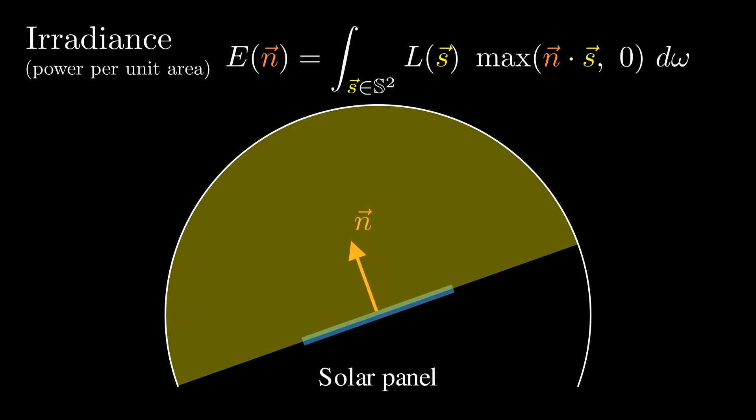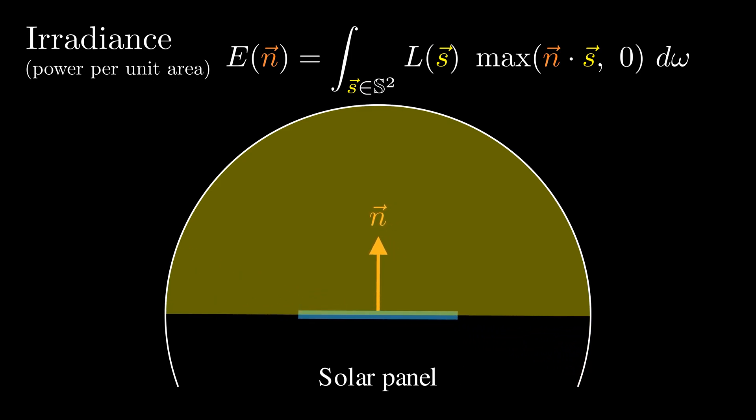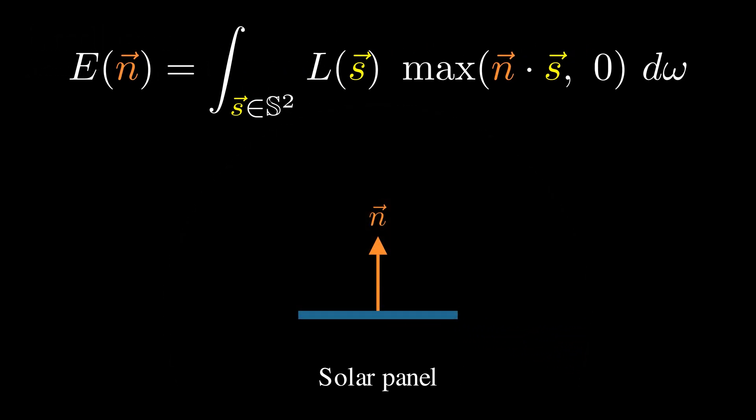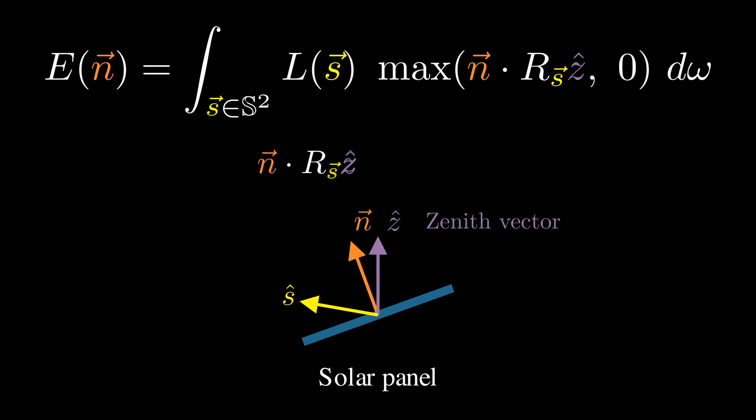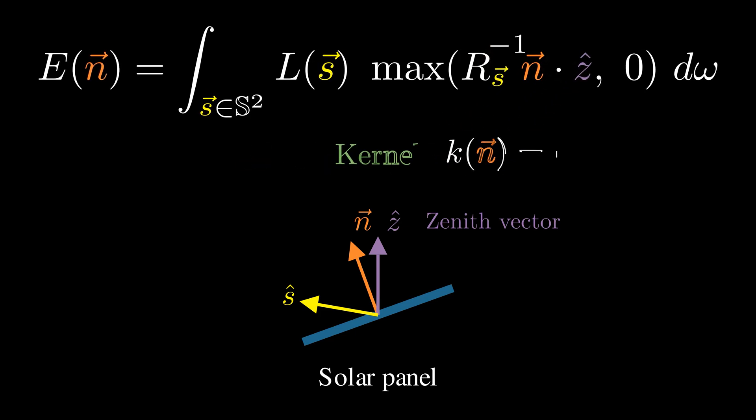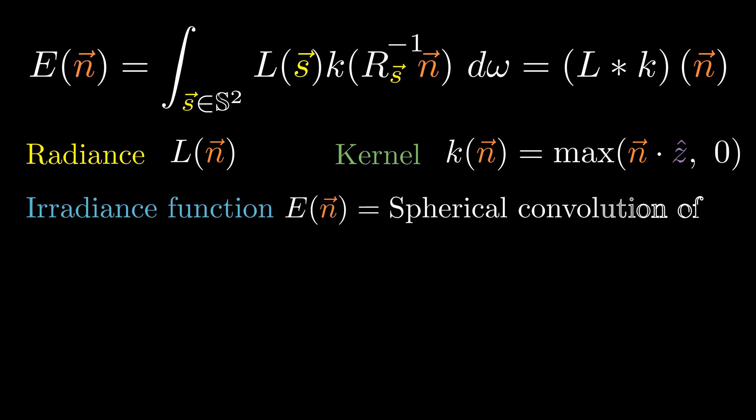The key question becomes how do we choose the optimal surface normal vector n that maximizes this total irradiance? Let's take a closer look at this equation. We define the zenith direction pointing straight up as the unit vector z hat. Any direction vector S on the hemisphere can be represented as a rotation of the zenith vector. With this insight, we can reinterpret the total irradiance equation. The total irradiance is the convolution between the radiance function L and the kernel K on the sphere.